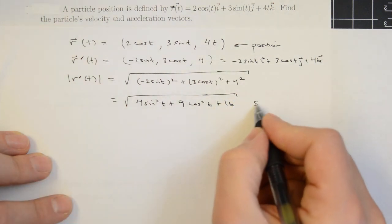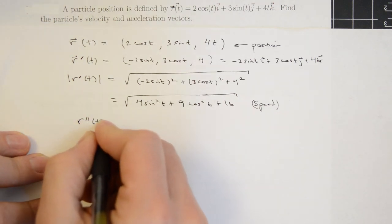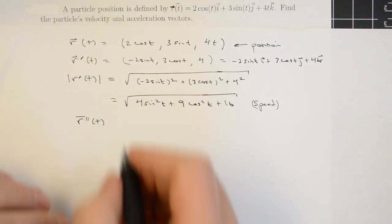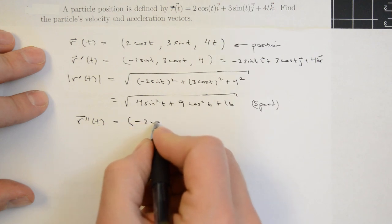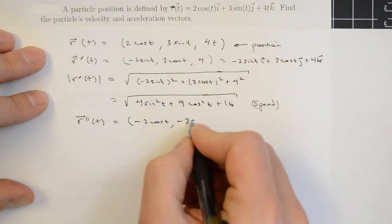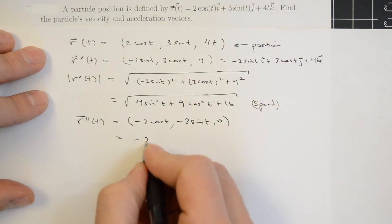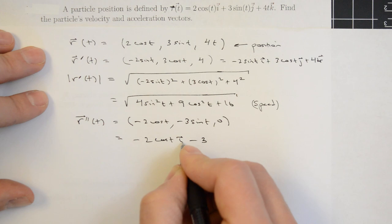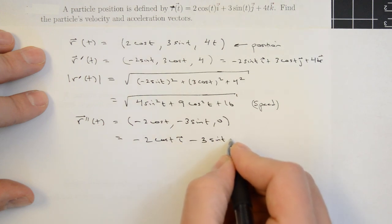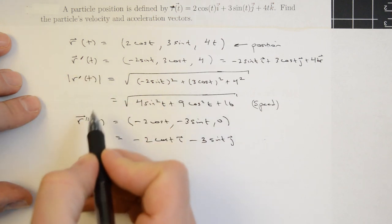This expression under the square root gives the speed for each value of t. The acceleration, or second derivative, is also computed component-wise: the derivative of the x-component is minus 2 cosine t, the derivative of the y-component is minus 3 sine t, and the derivative of the z-component is 0. In vector notation we can write this as minus 2 cosine t i minus 3 sine t j, omitting the zero k-component. So this gives us position, velocity, speed, and acceleration.